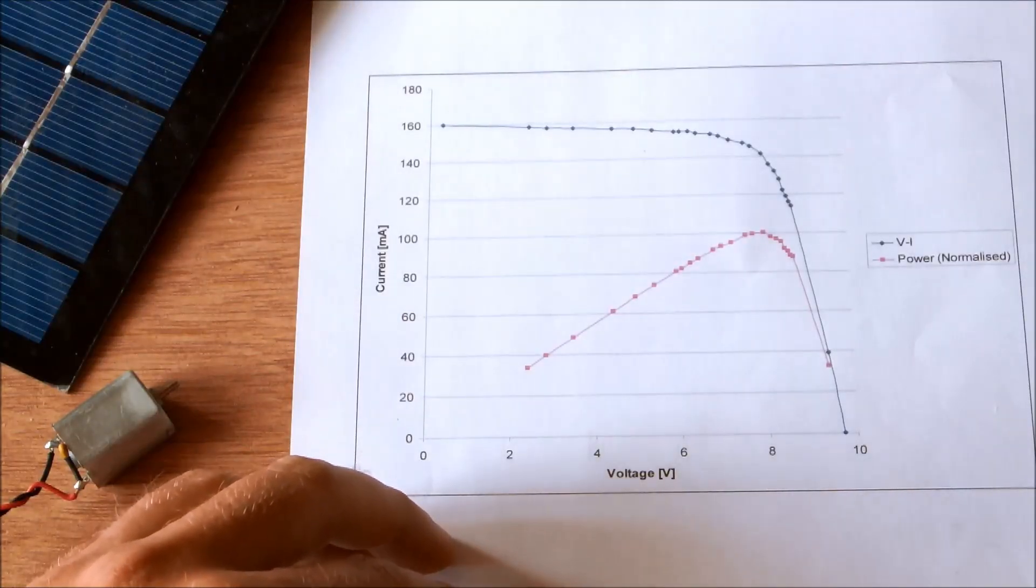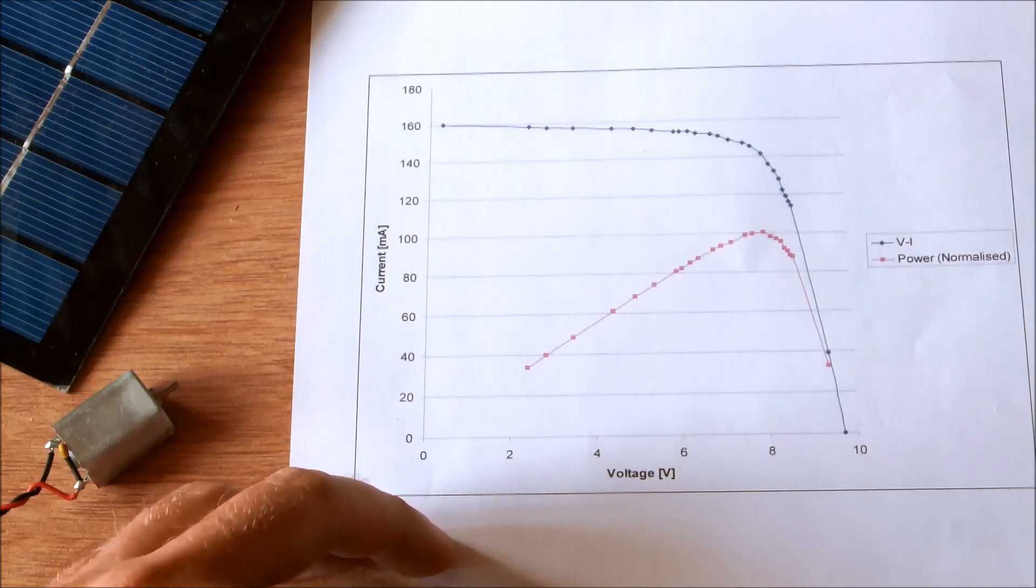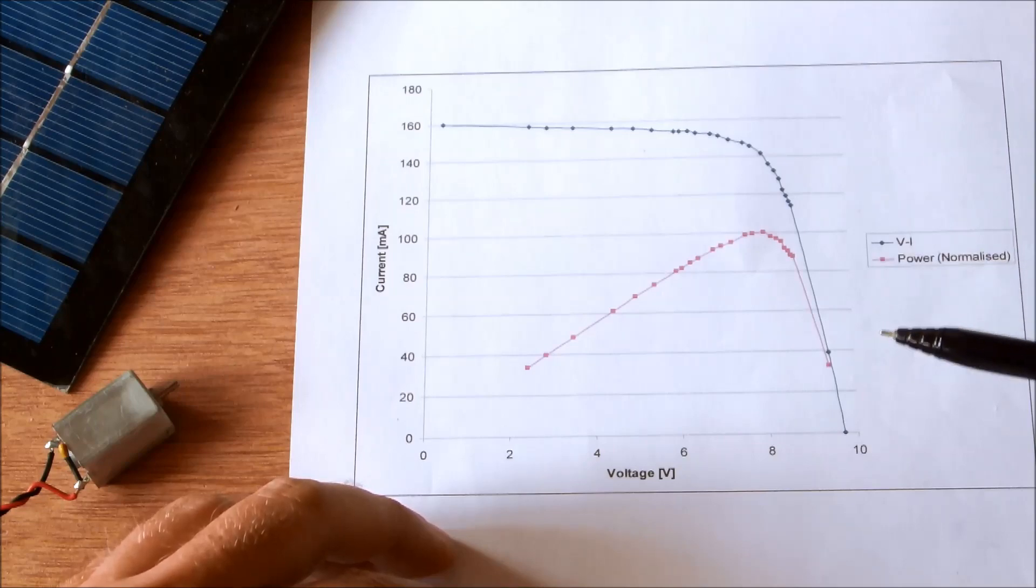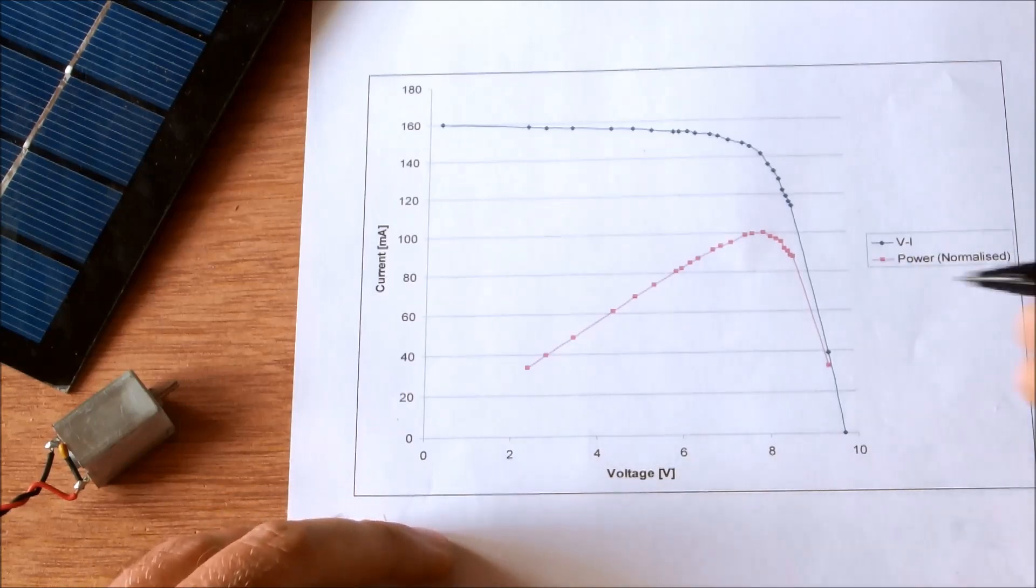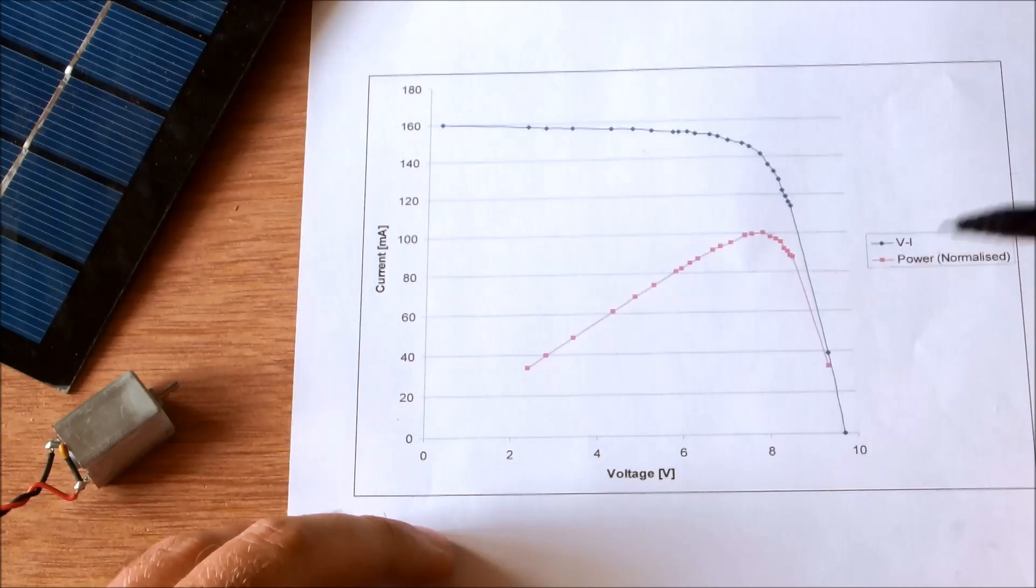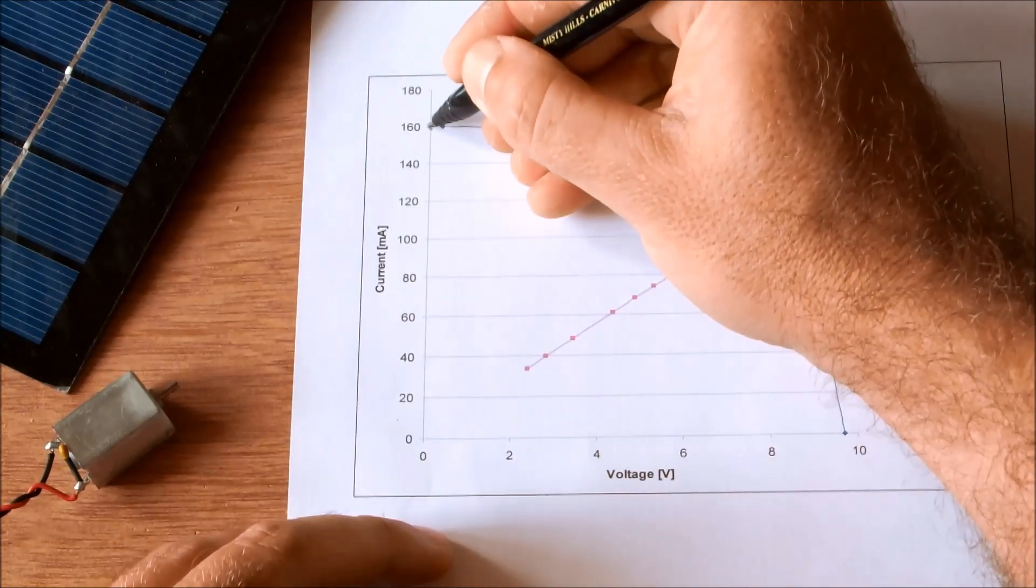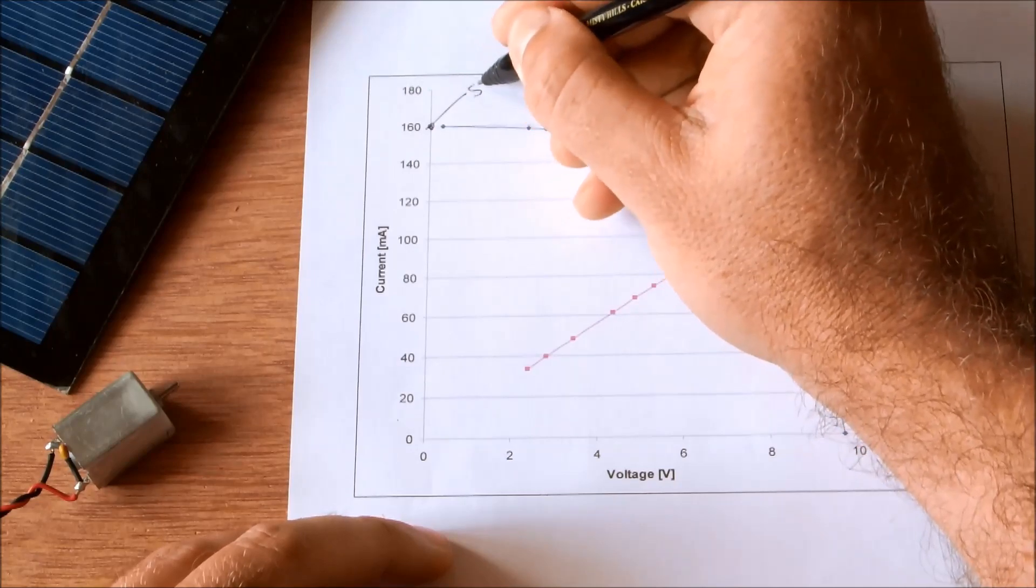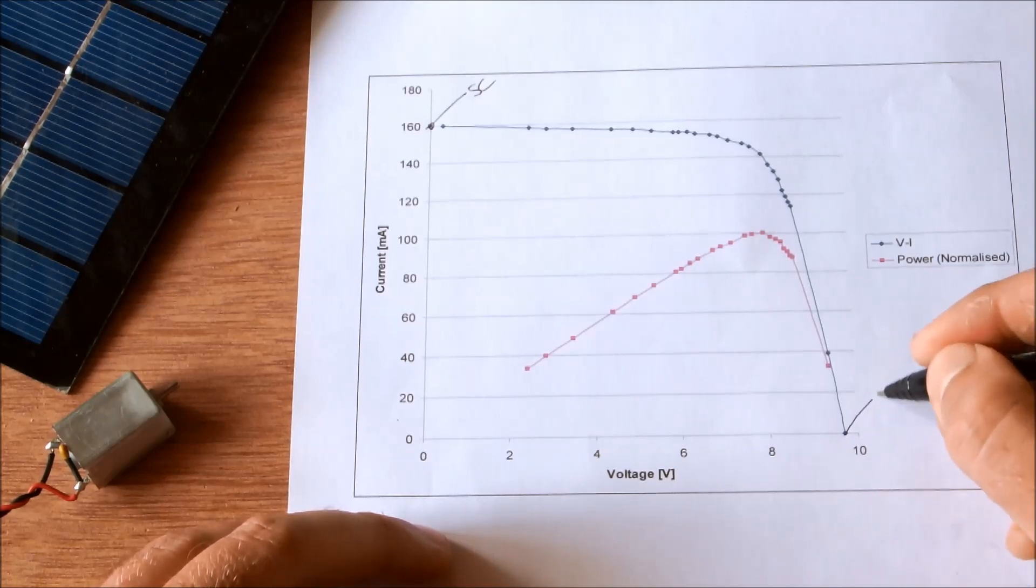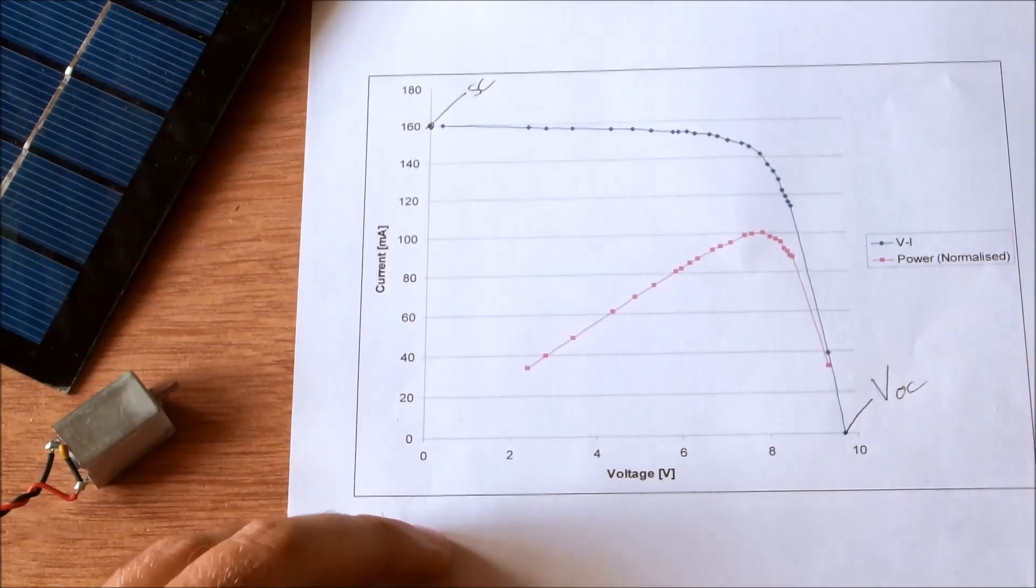These are the results. For the first test I deliberately angled the solar panel away from the sun, that was to keep the output current below 200 milliamps and it allowed me to take very accurate readings using a cheap multimeter. So the power over here is normalized. So it's not the absolute power but current and voltage is correct. This would be the short circuit current and this would be the open circuit voltage.